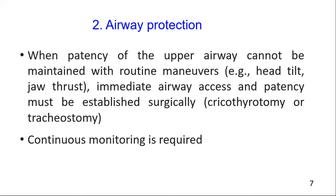The second most important primary goal is airway protection. Serious infections in proximity to the upper airway may cause airway obstruction leading to respiratory insufficiency or failure. When patency of the upper airway cannot be maintained with routine maneuvers such as head tilt or jaw thrust, immediate airway access must be established surgically — typically with cricothyroidotomy or tracheostomy. Continuous monitoring of the patient is mandatory in such conditions.